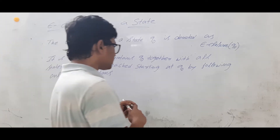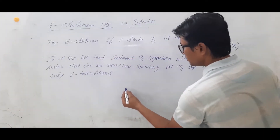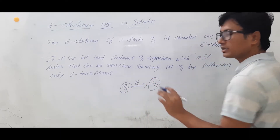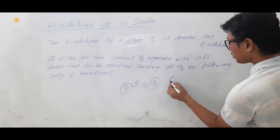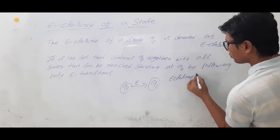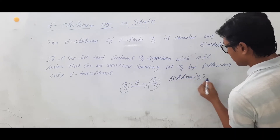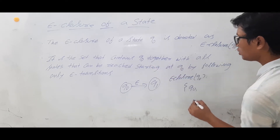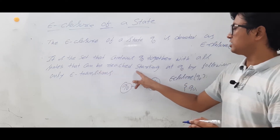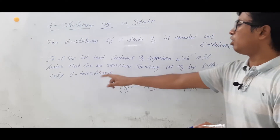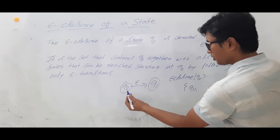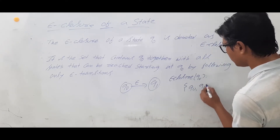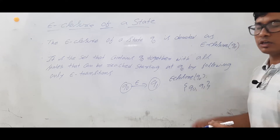For example, suppose from q0 on epsilon you are going to q1. Then epsilon-closure(q0) will consist of q0 together with all the states that can be reached starting at q0 by following epsilon moves. So from q0 on epsilon you are reaching q1, meaning epsilon-closure(q0) will be {q0, q1}.